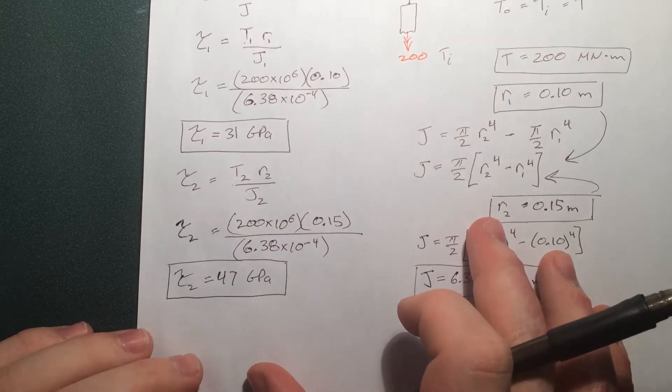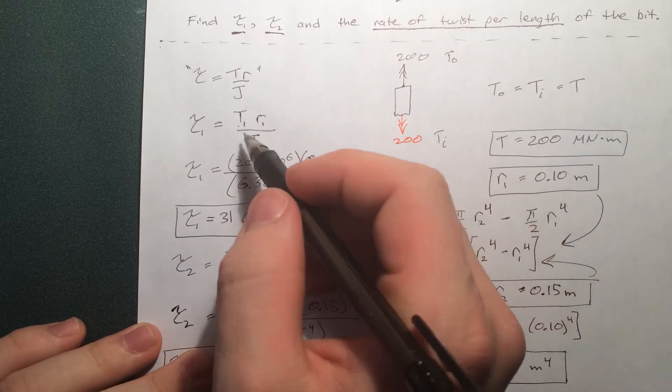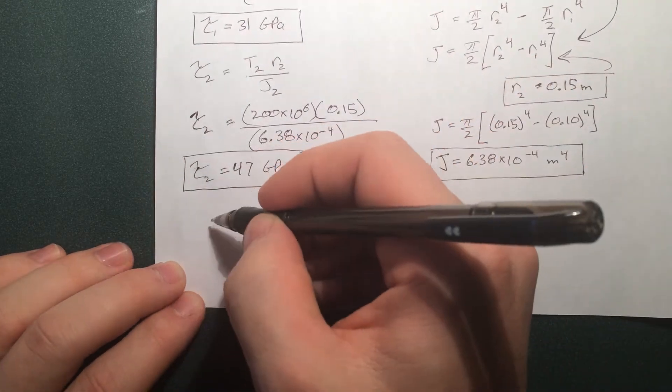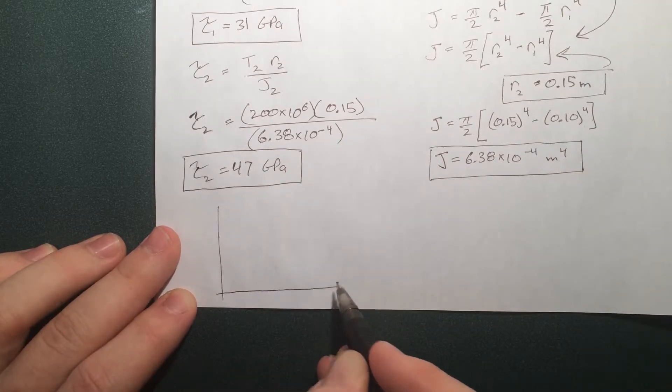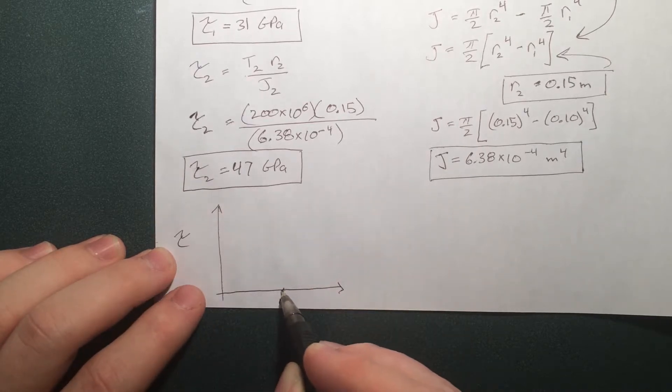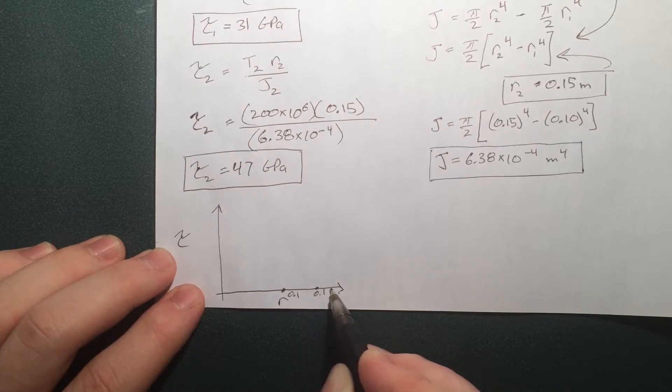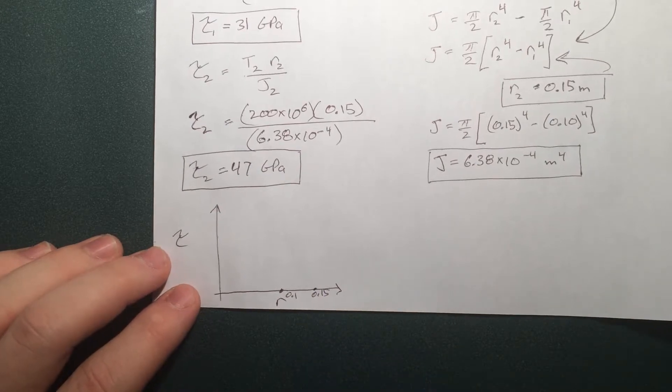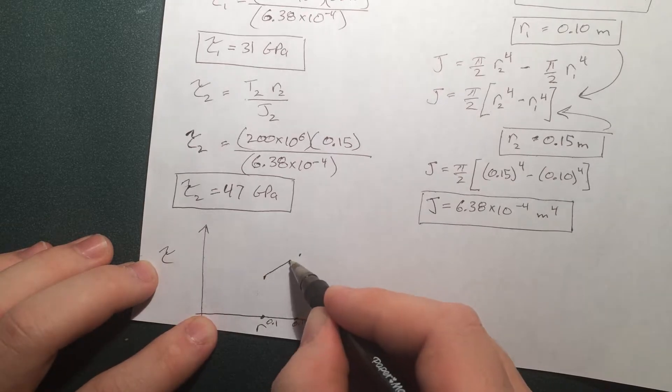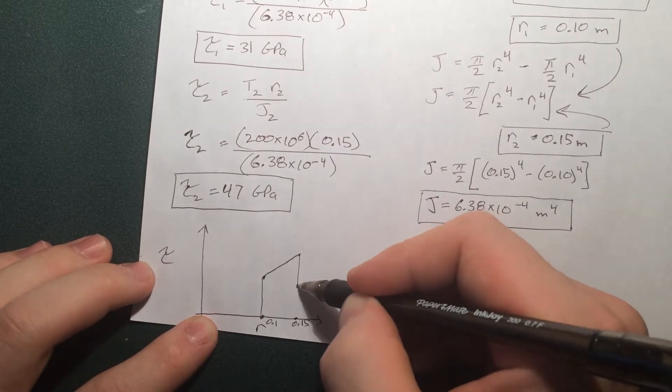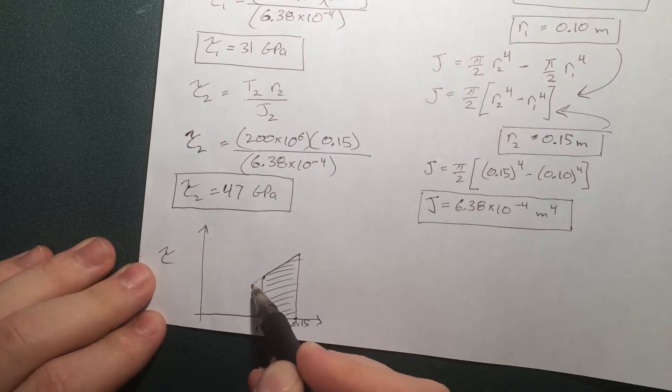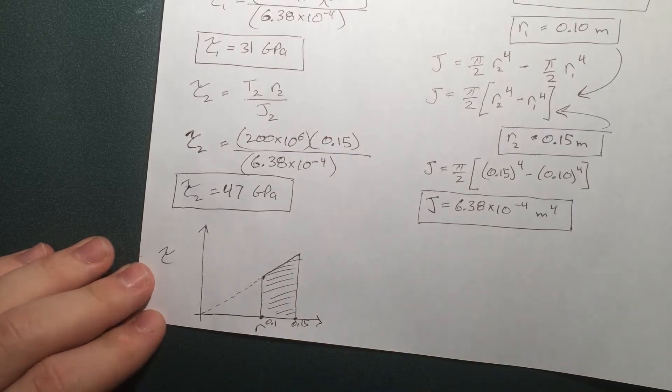So you can see this is linearly increasing which makes sense because the radius is just to the power of 1. So you increase the radius linearly, the torque is going to increase linearly. So we can kind of get a visual representation of what this looks like if you graph the shear stress versus the radius. So we have 0.1 and 0.15 meters. And we're told that it's 31 here and 47 here. So we connect the dots. This is the shear stress distribution as a function of radius. And if you really want you could just extend this all the way back to 0 here.